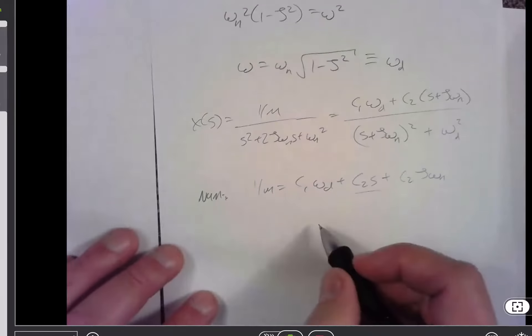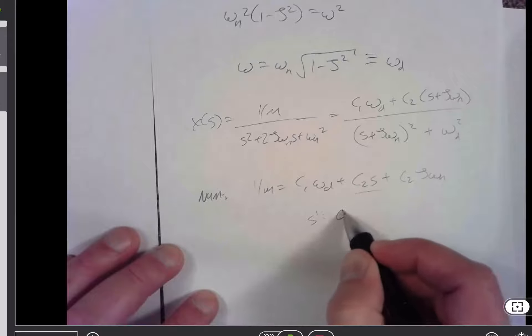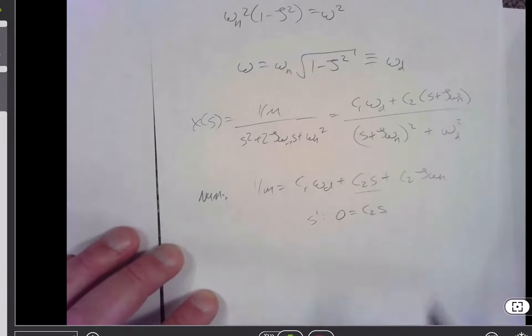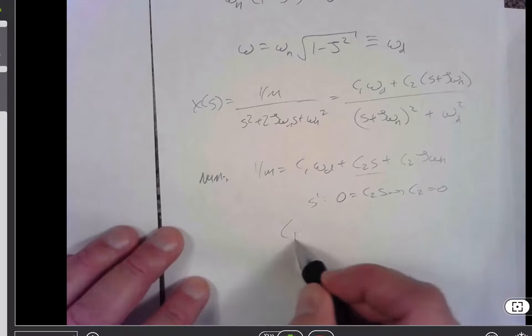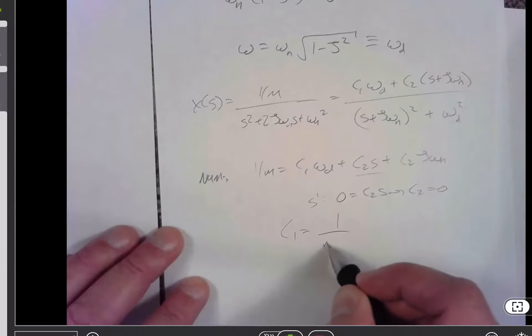So the s to the first term tells me that 0 is equal to c2 s. Well, that implies that c2 is equal to 0. Then I can solve this, so c1 is equal to 1 over m omega d.